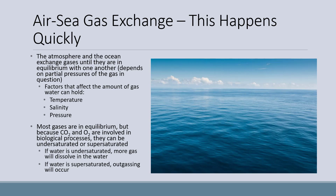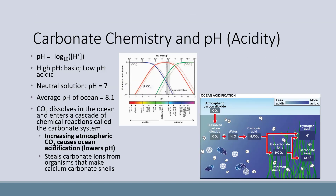If water is undersaturated, more gas will dissolve into the water; if water is supersaturated, outgassing will occur. Another factor affecting the slow carbon cycle is carbonate chemistry, which is affected by pH and atmospheric concentrations of CO2.